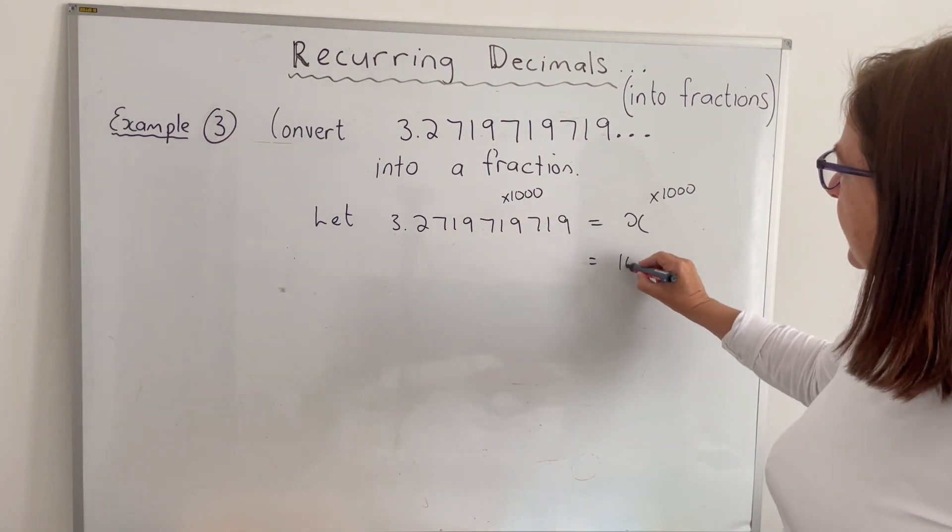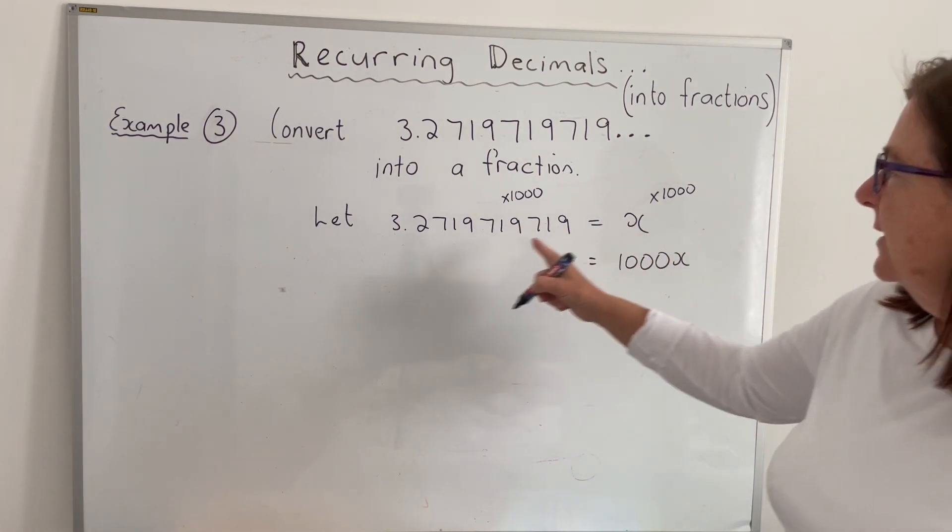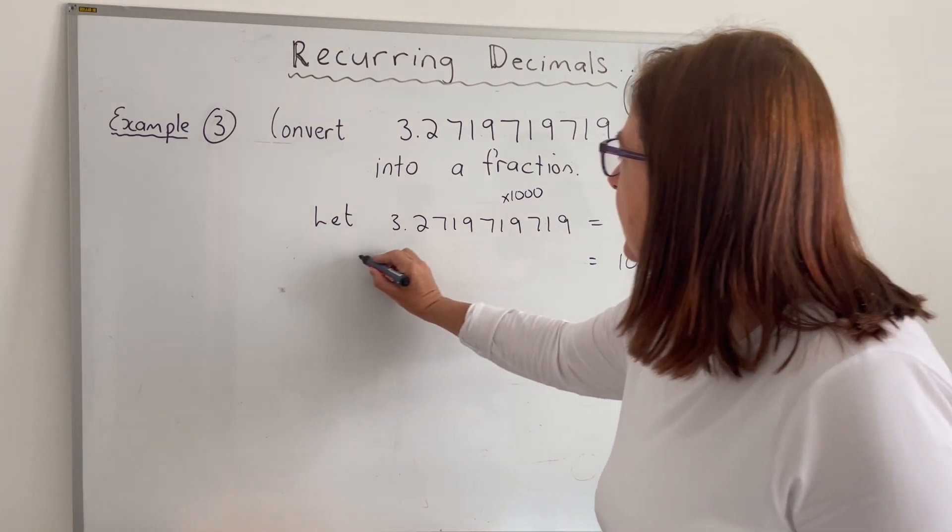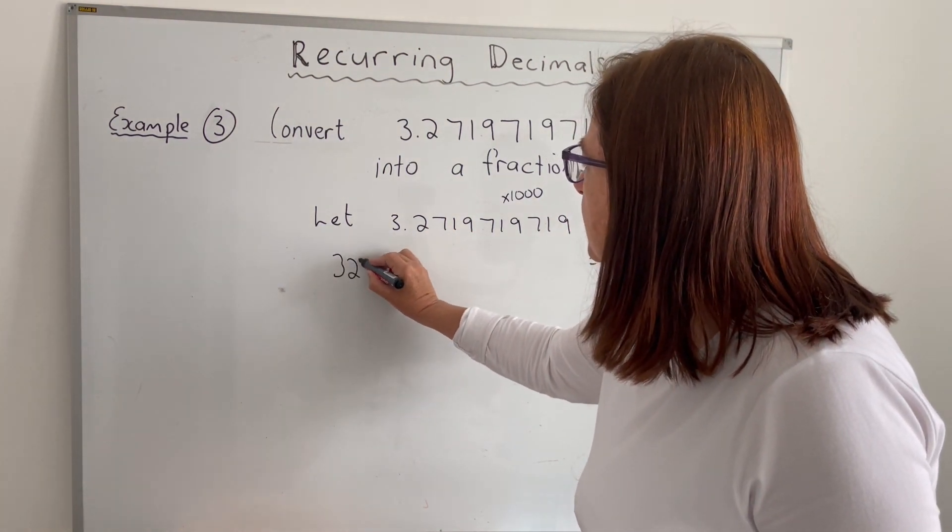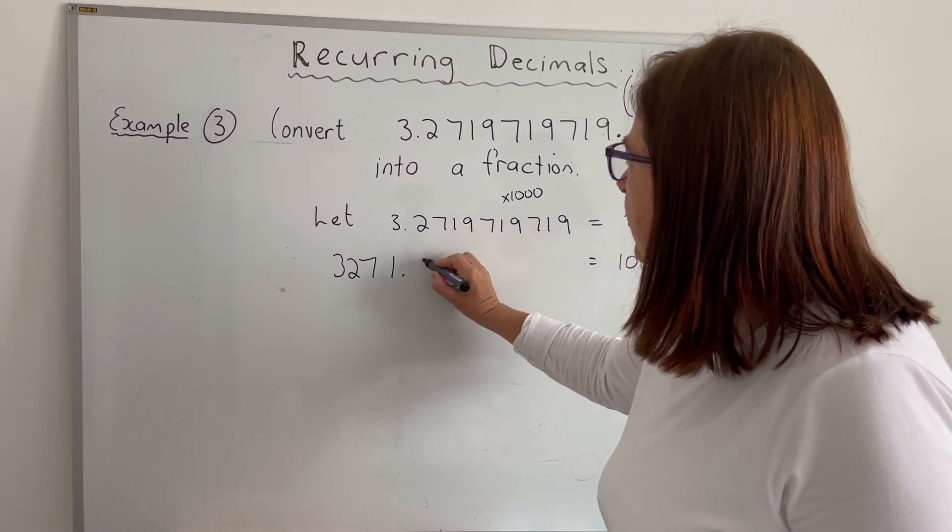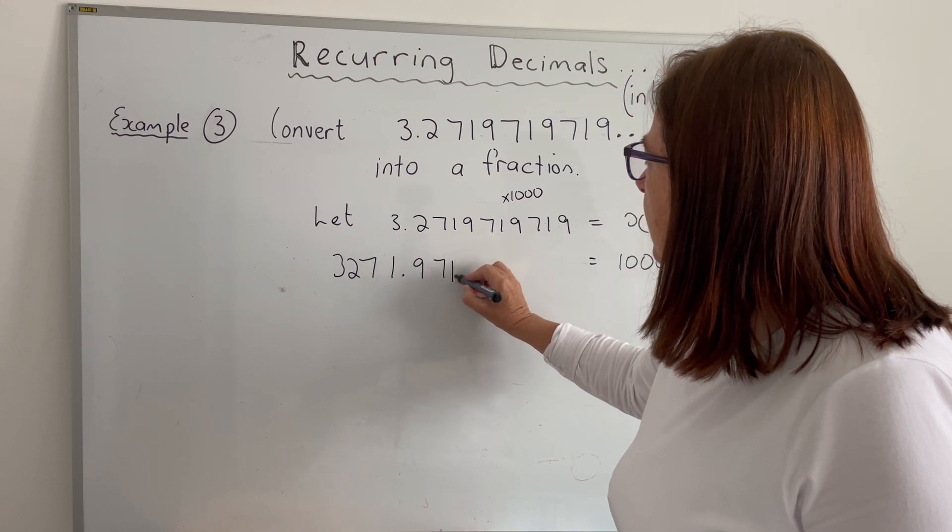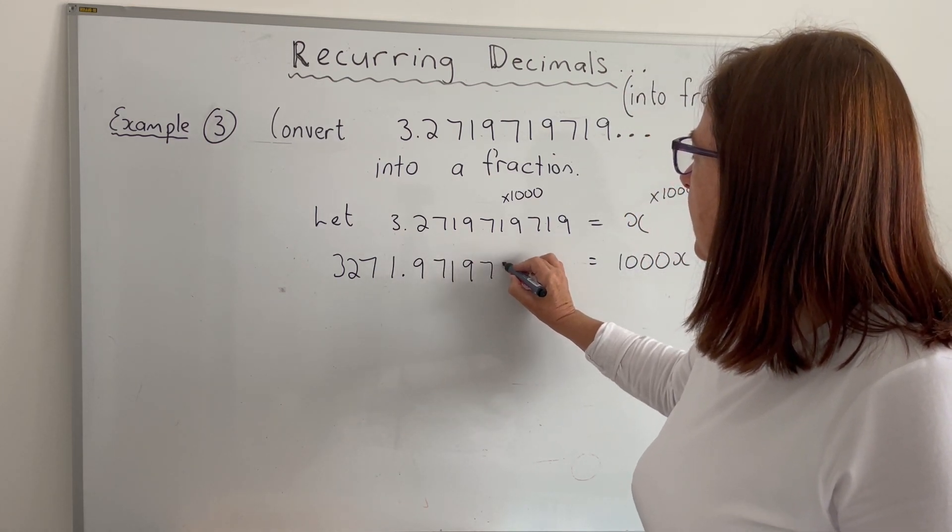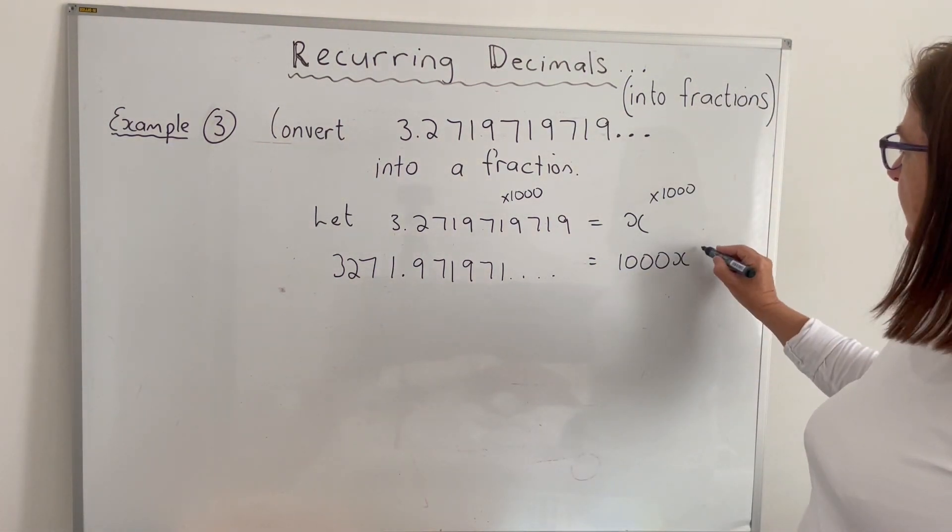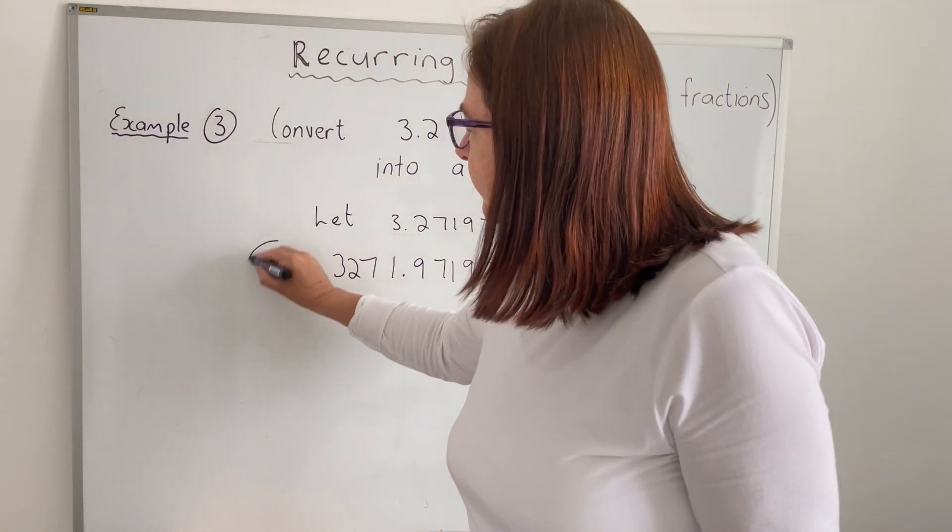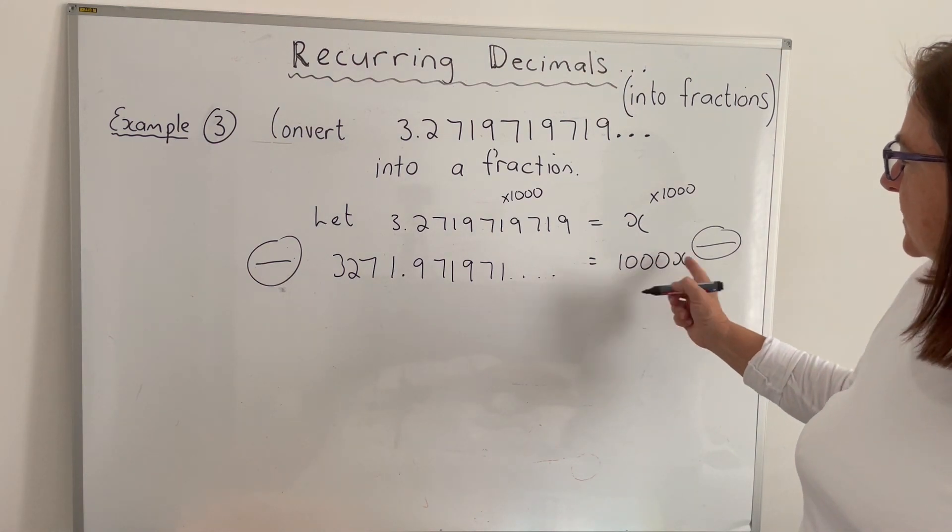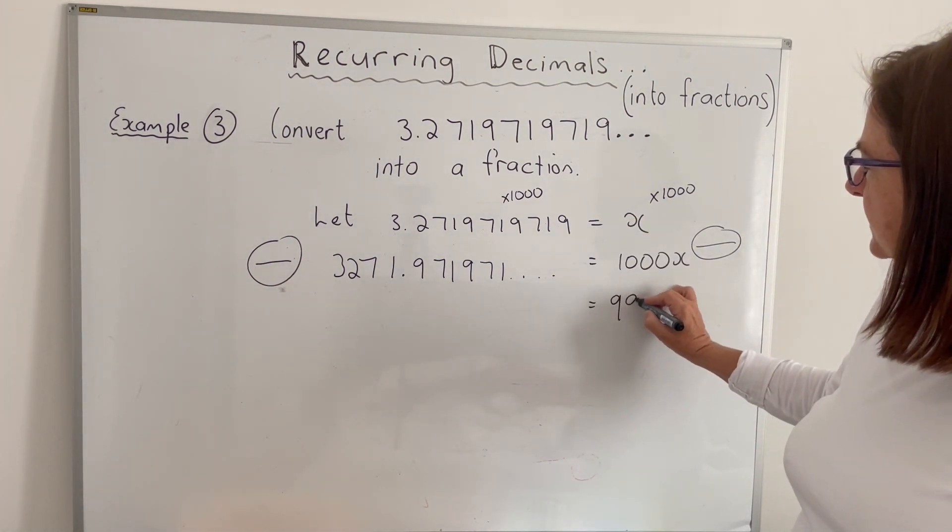The right hand side now will become 1000x and the left hand side we multiply by 1000, we move the decimal three places. So my number is going to be 3271.971971 and so on. Once I've multiplied by 1000, next step is to subtract on both sides. So if I subtract here, 1000x minus 1x will be 999x.